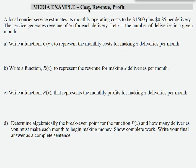Here we have a cost revenue profit example. A local courier service estimates its monthly operating cost to be $1,500 plus $0.85 per delivery. The service generates revenue of $6 for each delivery.